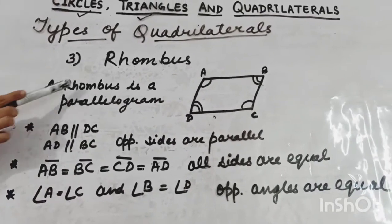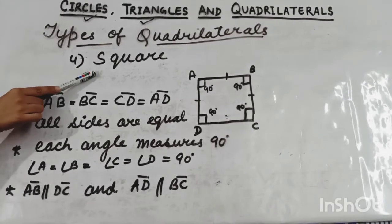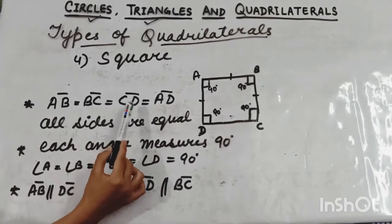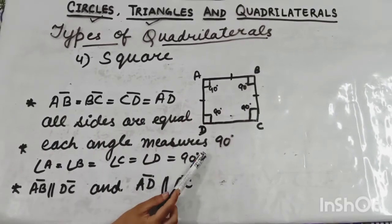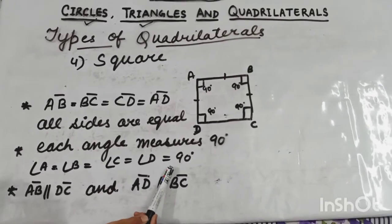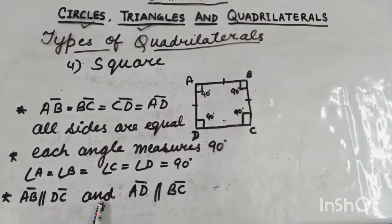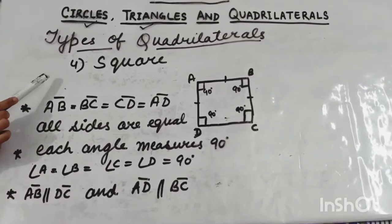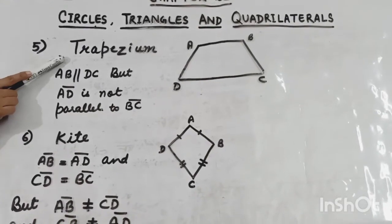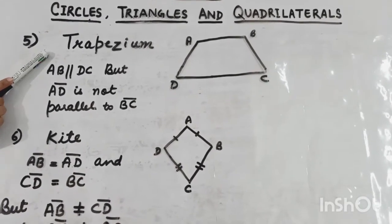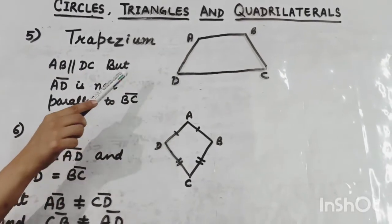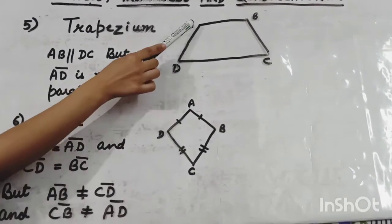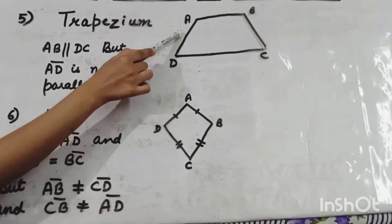So rhombus is also a parallelogram. Next is square. Square is also a parallelogram. In a square, all four sides are equal: AB, BC, CD, DA are all equal to each other. Also, all angles are 90 degrees. And opposite sides are parallel: AB is parallel to DC, and AD is parallel to BC. So square is also a parallelogram.